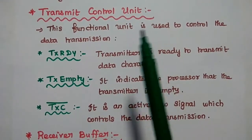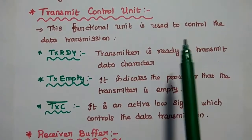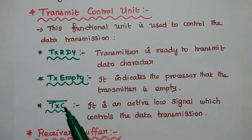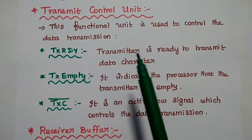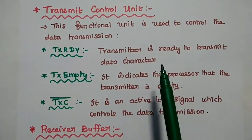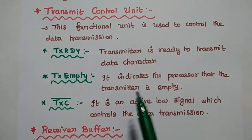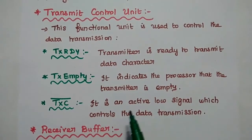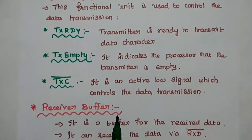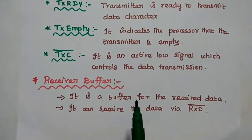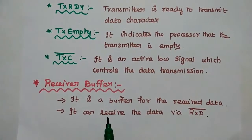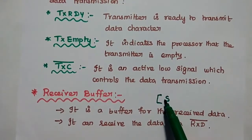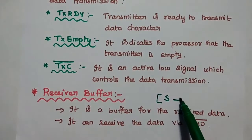The transmit control unit controls data transmission in the transmit buffer using three signals: Transmit Ready (TXRDY) — indicates the transmitter is ready to accept a data character from the CPU; Transmit Empty (TXE) — indicates the transmitter is empty so the processor can send data; and Transmit Clock (TXC) — an active low signal that controls the data transmission rate. The receive buffer receives data via RxD, accepts serial bits from the peripheral device, converts them into parallel bits, and transmits those parallel bits to the CPU.